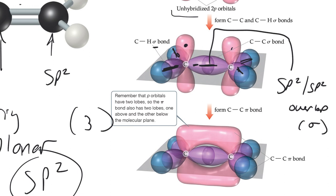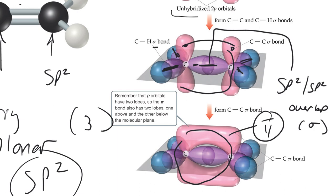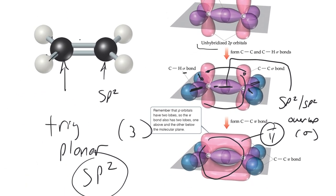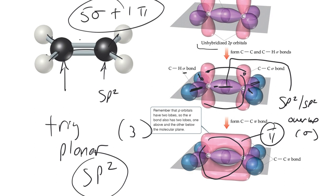The leftover p orbitals — unlike in BCl3 where nothing goes into them — here have electrons that need to make one more bond, so we make a pi bond. The pi bond is made by the leftover p orbitals overlapping together. It looks fundamentally different from sigma bonds: it's a planar bond rather than a bond-axis-symmetric bond. So: linear symmetric = sigma; planar symmetric = pi. In C2H4, we have five sigma bonds plus one pi bond. A double bond is one sigma plus one pi.